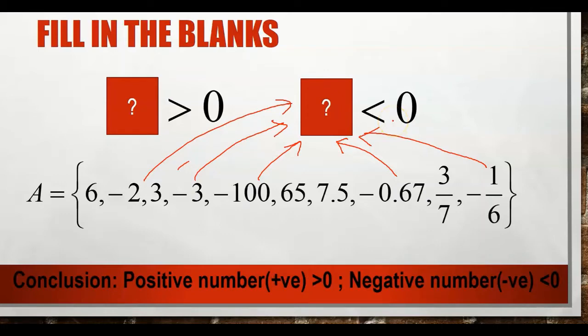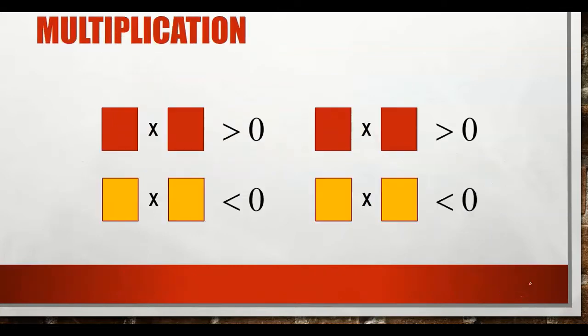Our conclusion: a positive number is always greater than 0, and a negative number is less than 0.